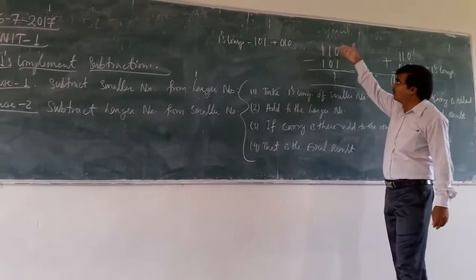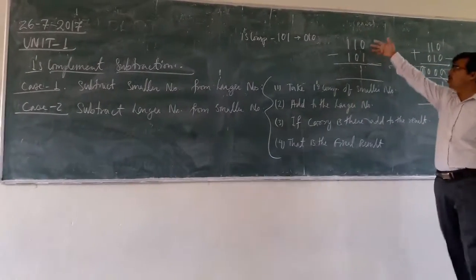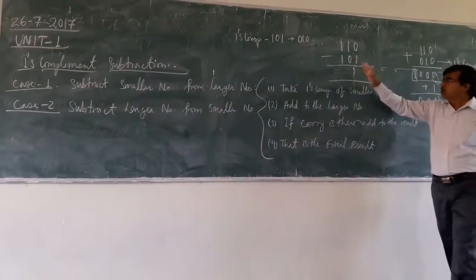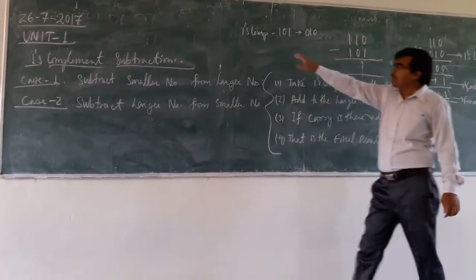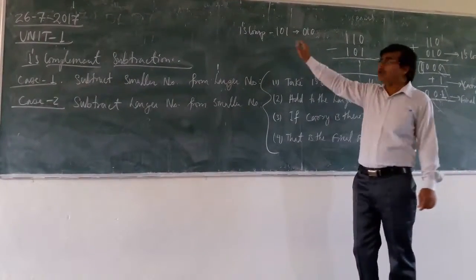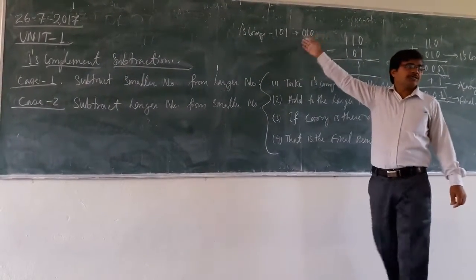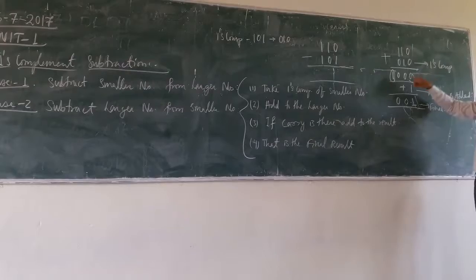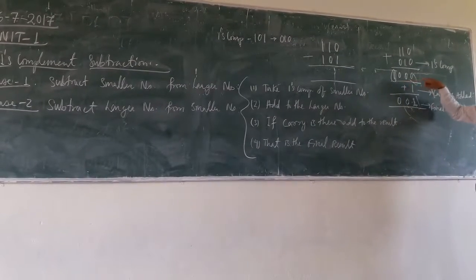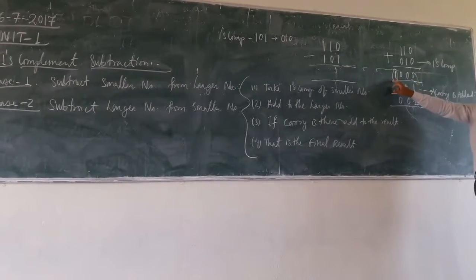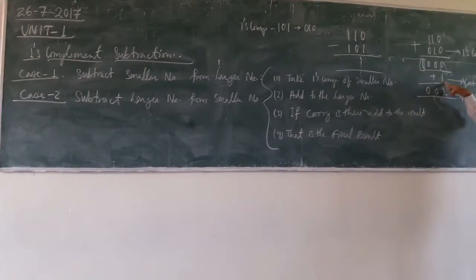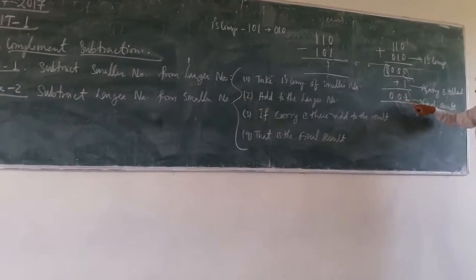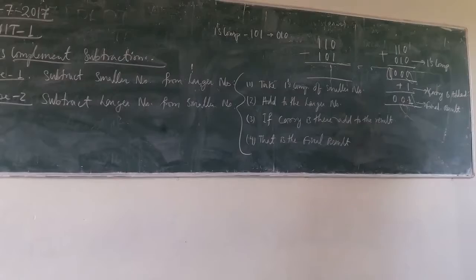Let us assume we are subtracting 101 from 110. Here the smaller number is 101. We take the 1's complement of 101, which is 010. We add this 1's complement to the larger number 110. There is a carry operation here; we add that carry to the result and we get 001. So 001 is the final result.